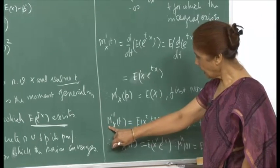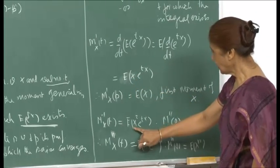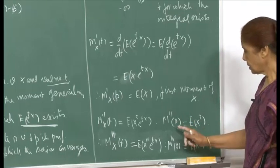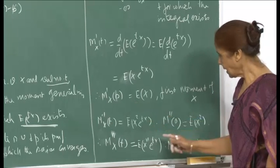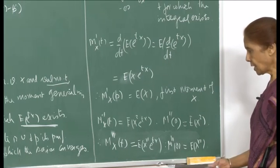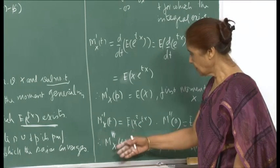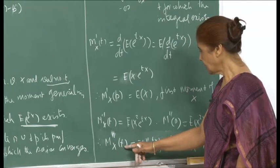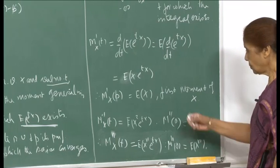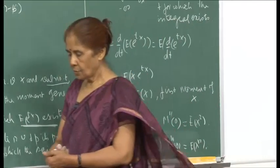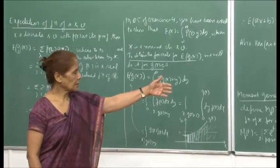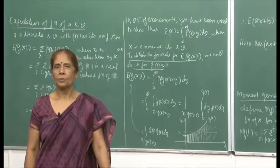The nth derivative of M_x(t) evaluated at t = 0 gives E[x^n], the nth moment. If you just compute the moment generating function, you can get all the moments through this formula. The first derivative of the MGF at 0 is the mean; the second derivative at 0 is E[x²], and so on.